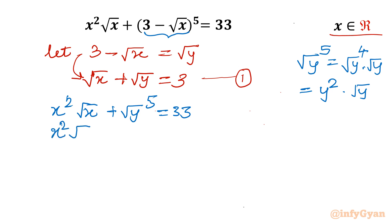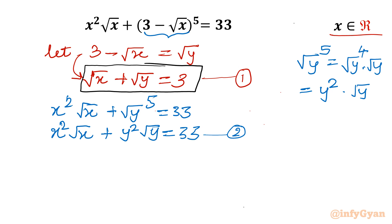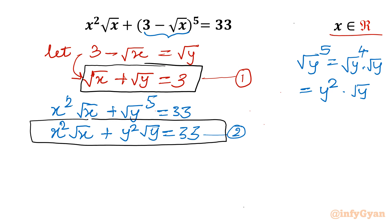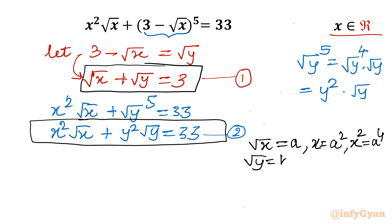So here I can write our equation as x²√x + y²√y = 33, and this is equation number 2. Now I will use a very interesting substitution to make our system radical-free. Let √x = a, so x = a² and x² = a⁴. Similarly for variable y, let √y = b, so y = b² and y² = b⁴.